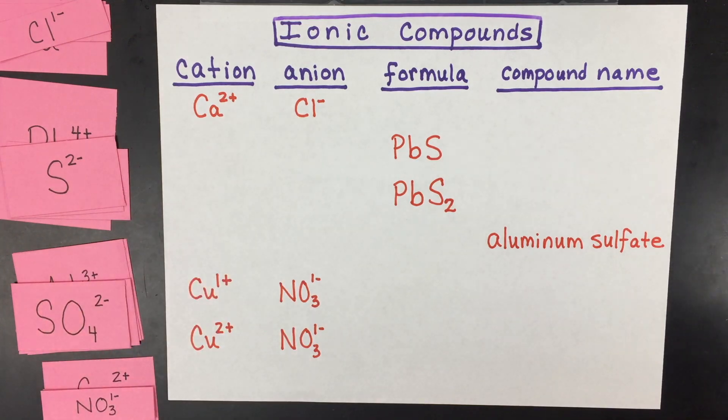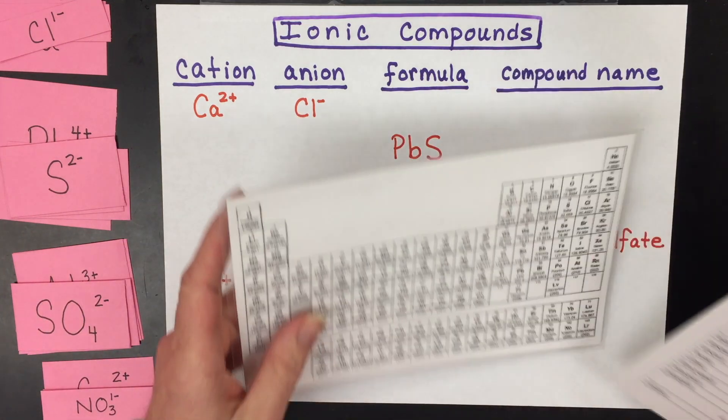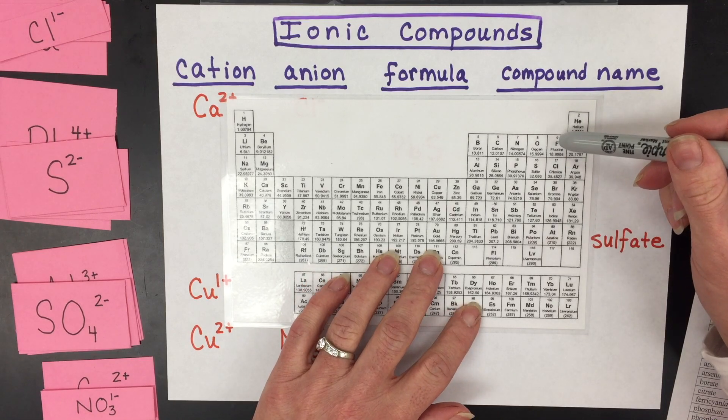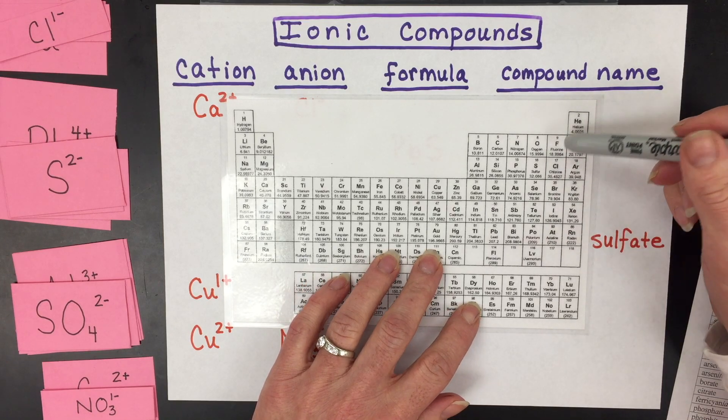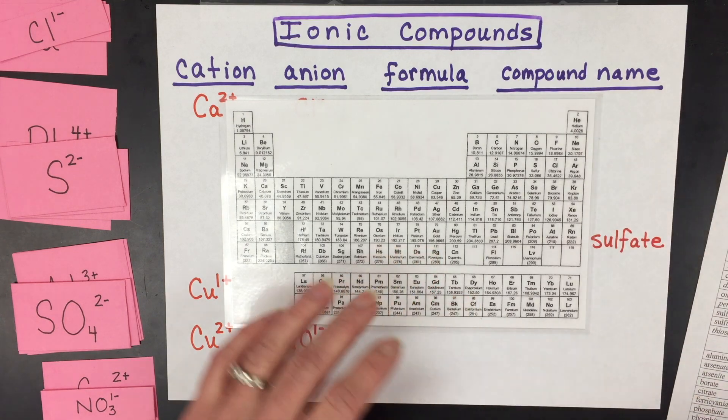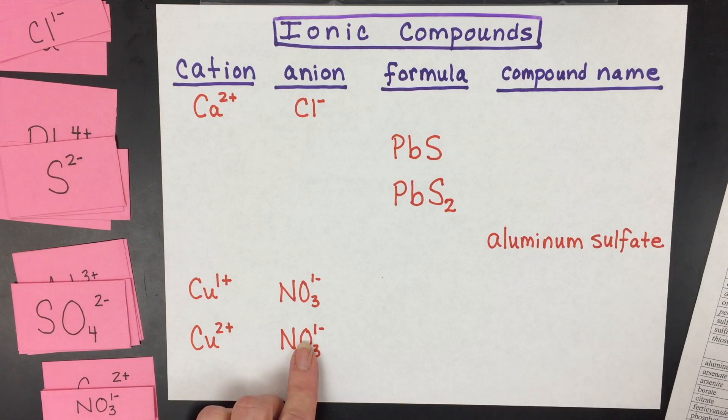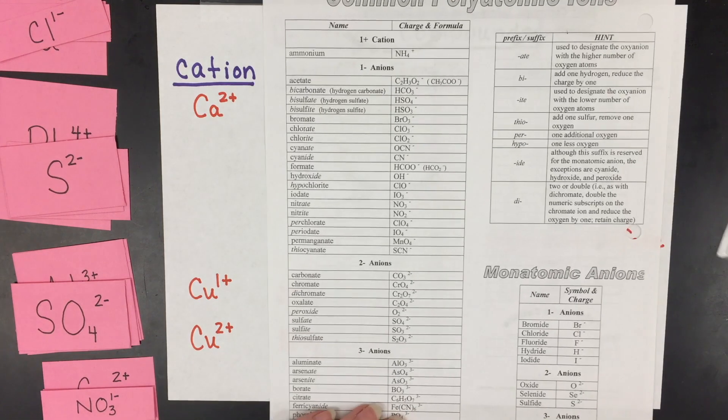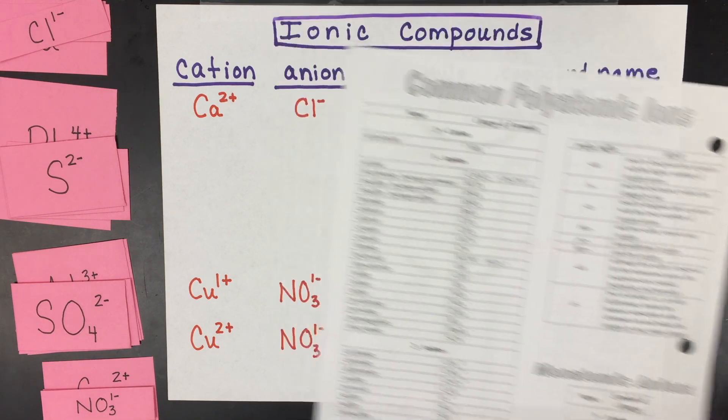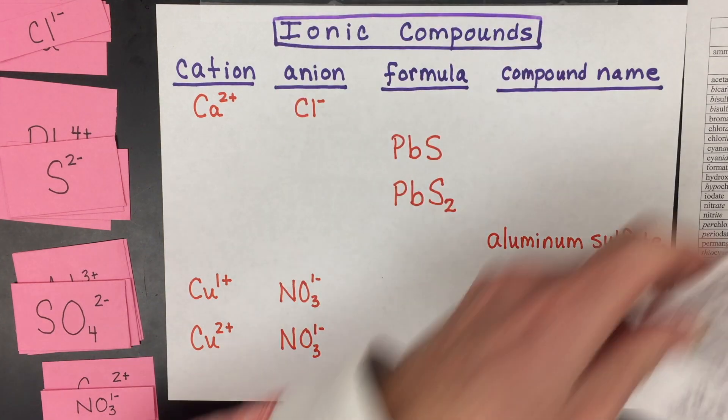The other thing you're going to have is an anion. The anion could be a nonmetal element that has gained electrons. So for the halogen family, for example, they'll gain one electron and chlorine will turn into chloride. Or you might have what are called polyatomic ions, and for those you'll have to memorize those or you'll need a list of those to be able to write and name ionic compounds correctly.